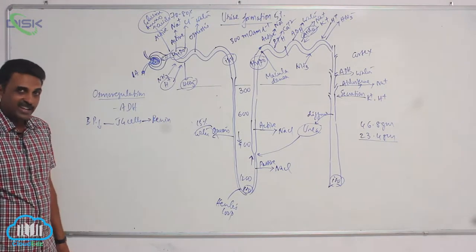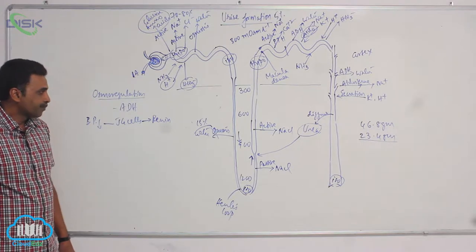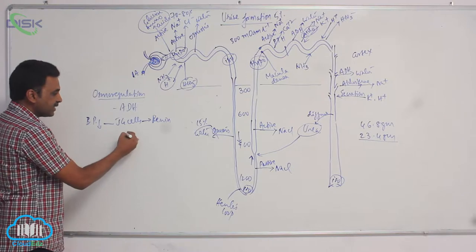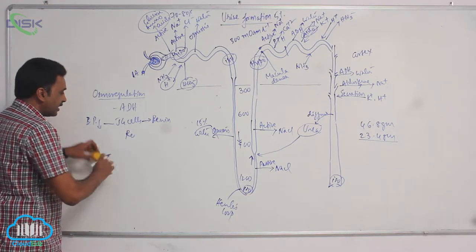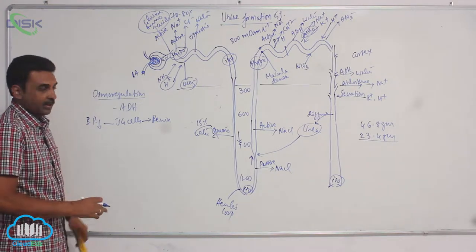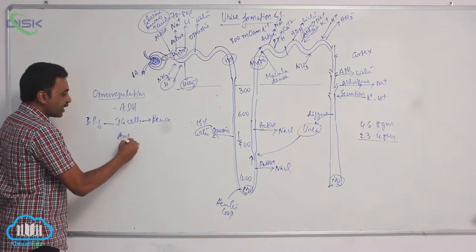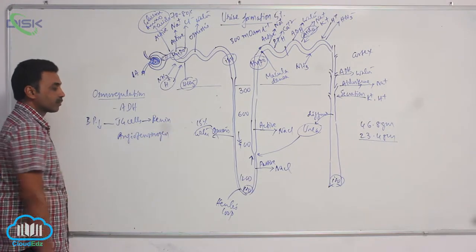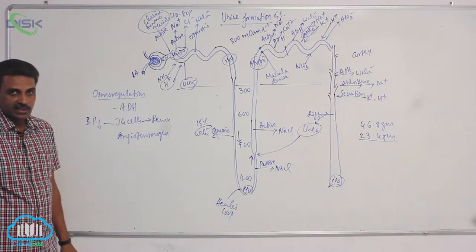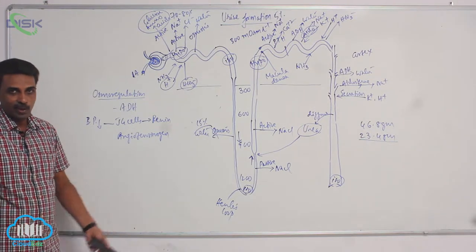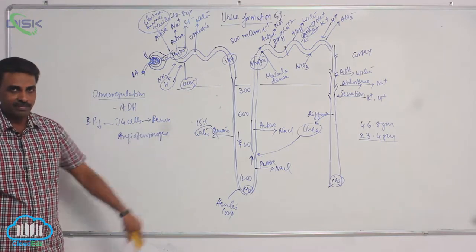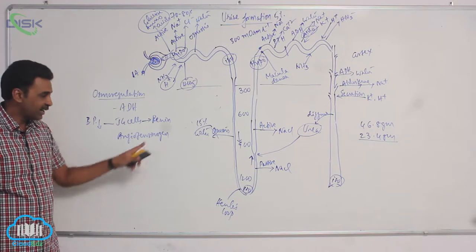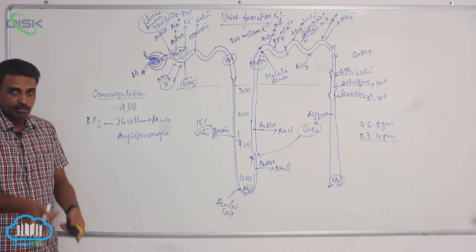Renin is an enzyme, R-E-N-I-N. This renin is released into the blood. In blood there is a protein called angiotensinogen. It's an angiotensinogen — it contains 452 amino acids. It's a protein. It's inactive. It is produced from the liver and it is inactive. It's already present in the blood.